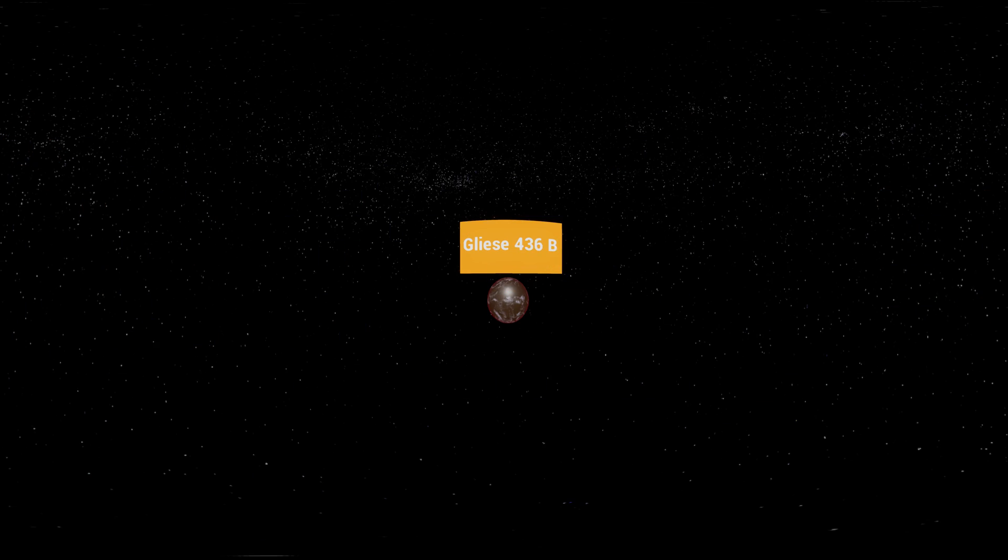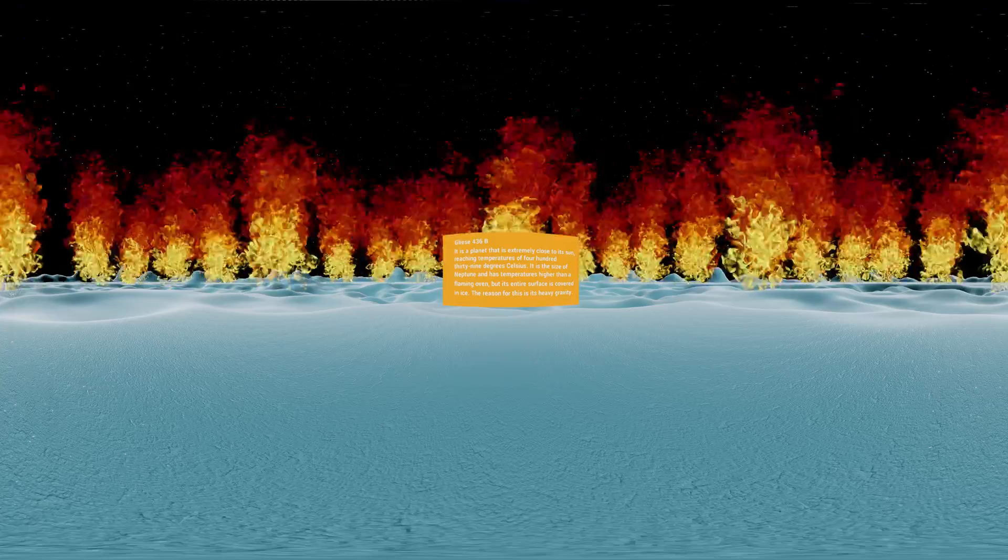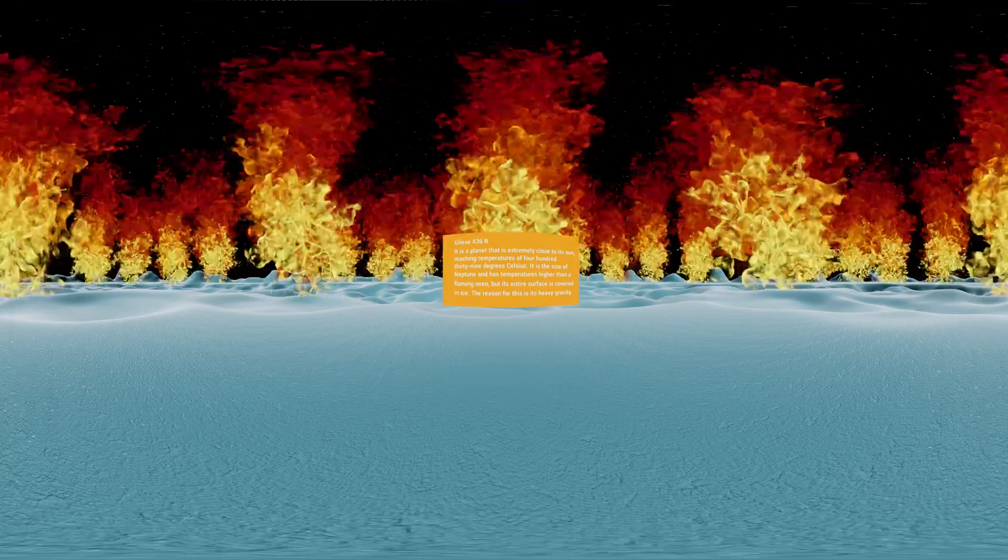Gliese 436b. It is a planet that is extremely close to its sun, reaching temperatures of 439 degrees Celsius. It is the size of Neptune and has temperatures higher than a flaming oven, but its entire surface is covered in ice. The reason for this is its heavy gravity.